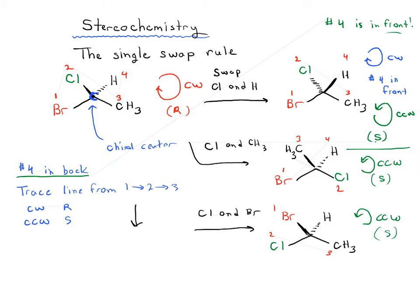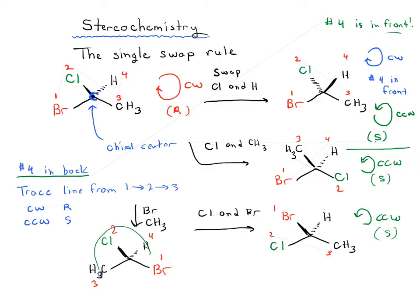That's three out of six possibilities. Let's do one more: swap bromine and CH3. We get CH3 where bromine was, H remains in the back, CL remains in the front, and bromine is here. Tracing 1, 2, 3 again goes counterclockwise — so this is S. We've done four examples, and every time we swap two groups it goes from R to S.